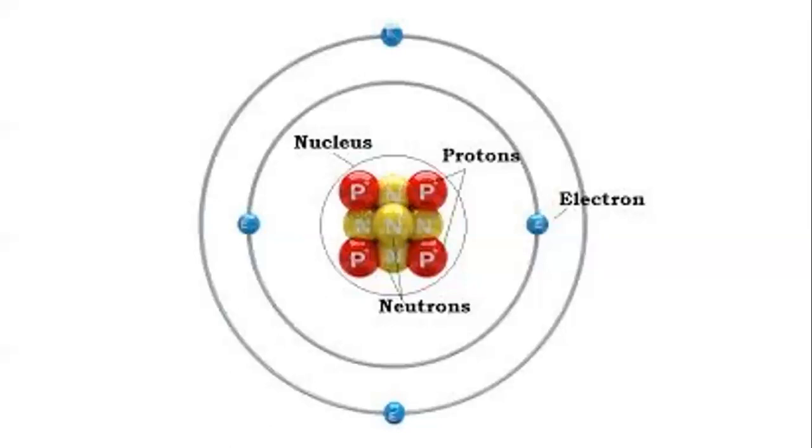An atom is neutral. In other words, it has no overall charge, and it's neutral because the numbers are equal of protons and electrons, so their charges cancel out. If the number of electrons and protons are not equal, the atom becomes a charged particle that we call an ion.